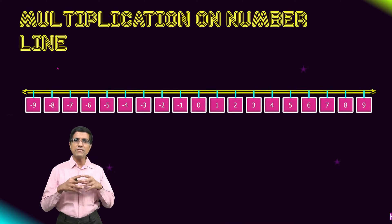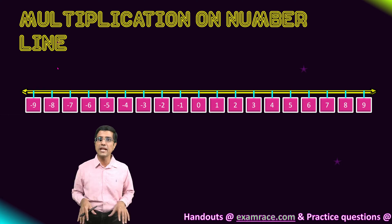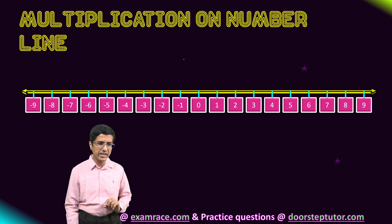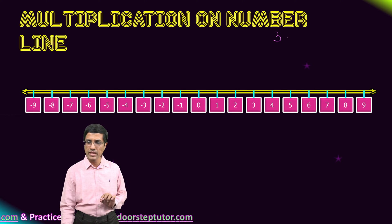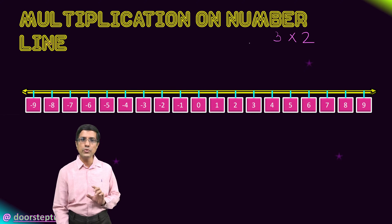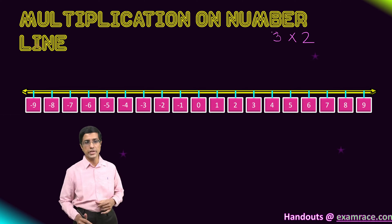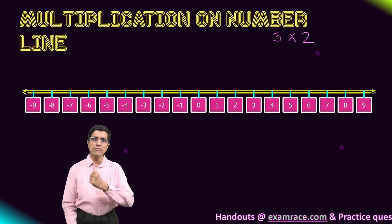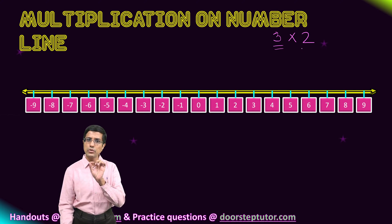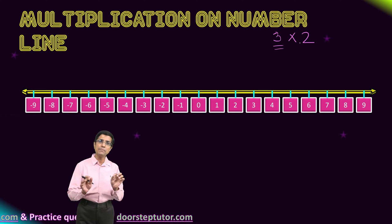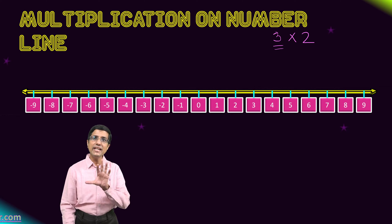Let's first start with a very simple case. We'll try to see how integer multiplication actually works on a number line. This is a very common example. We'll take an even simpler multiplication: what happens if we try to do 3 into 2? So if we are doing that kind of multiplication on the number line, how would we go about doing it? We have to multiply 3 two times, which means that we have to add 3 two times. Multiplication is simply repetitive addition.